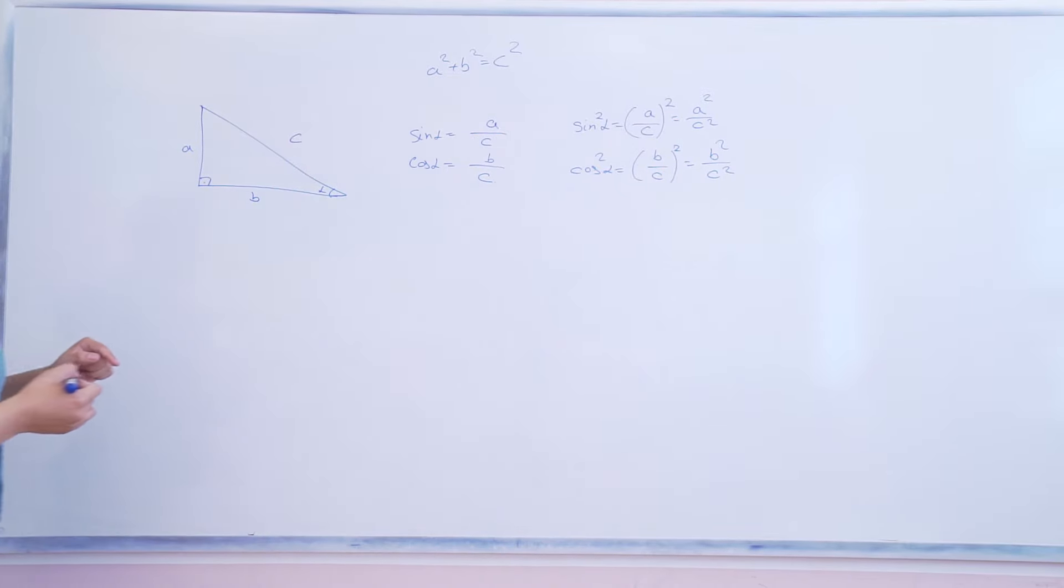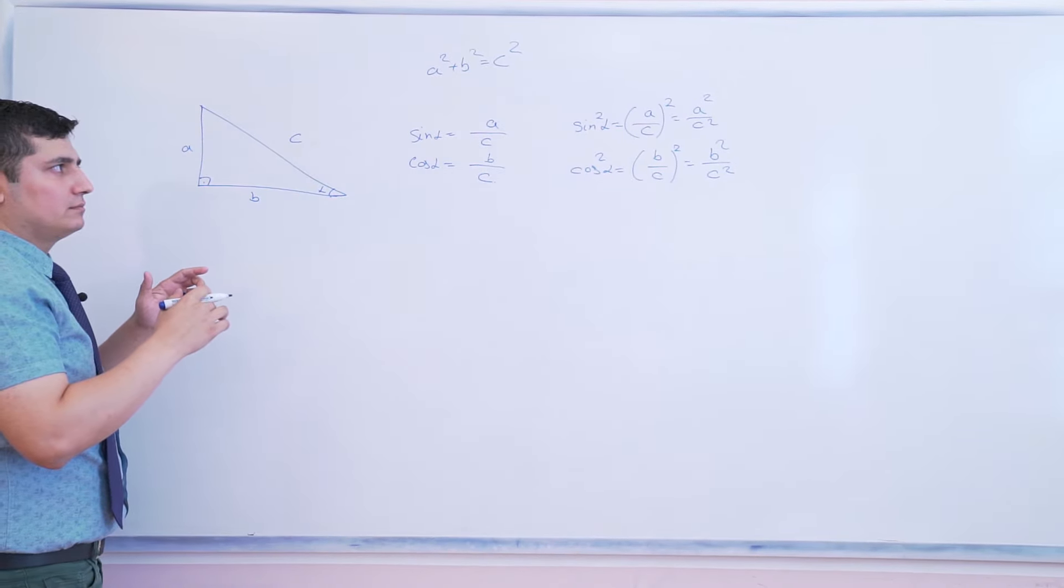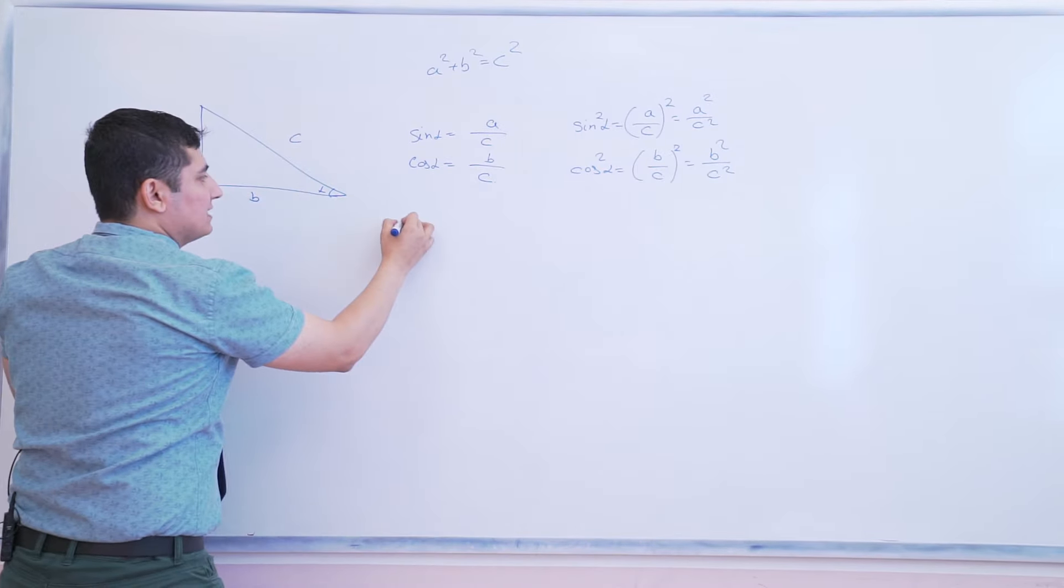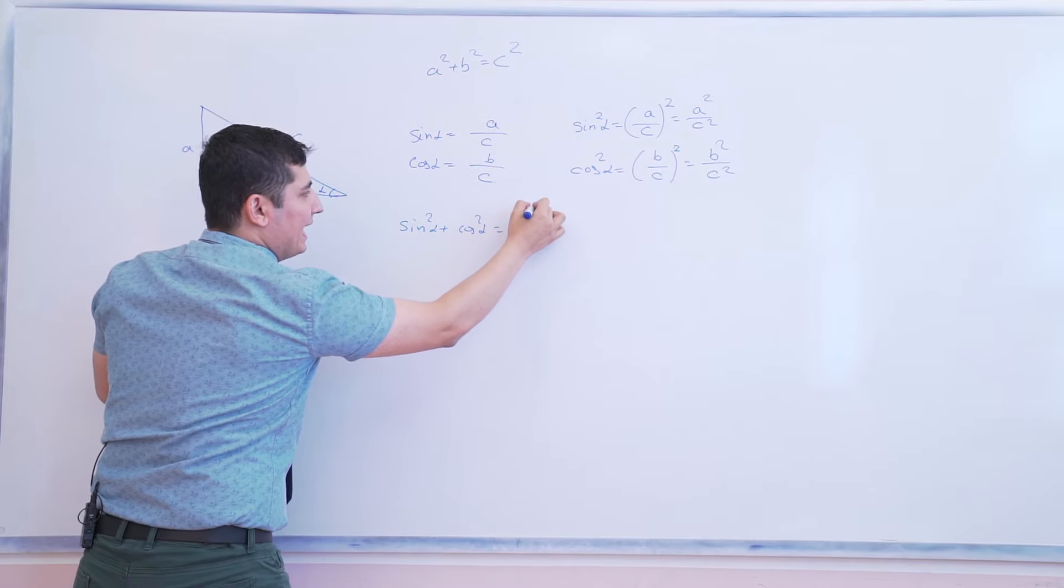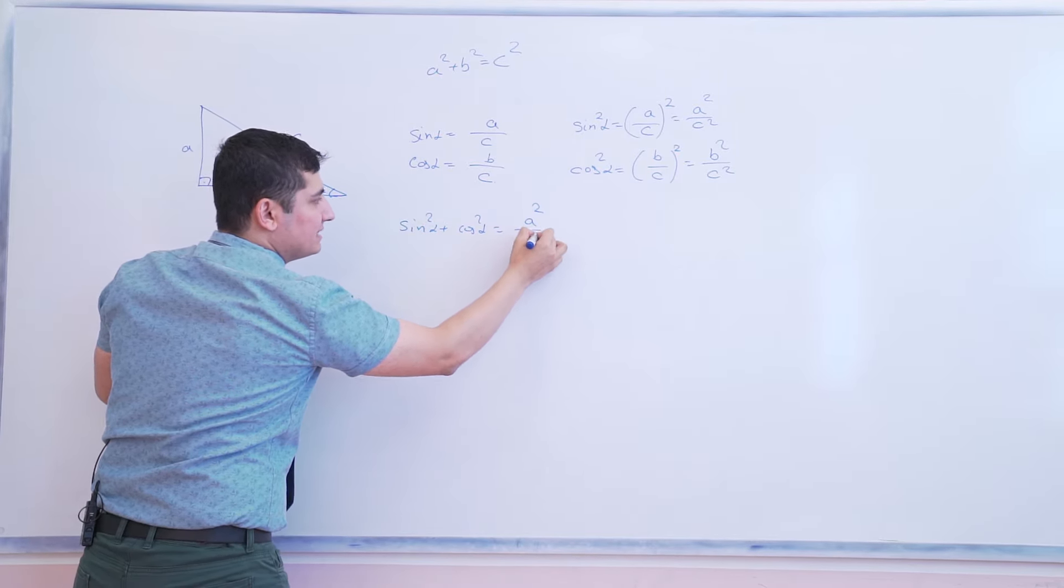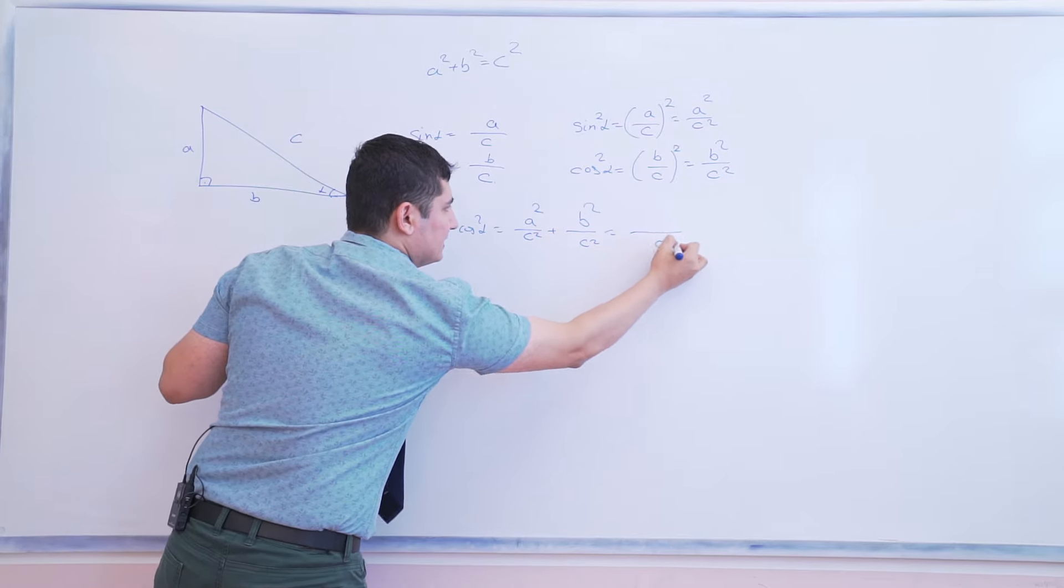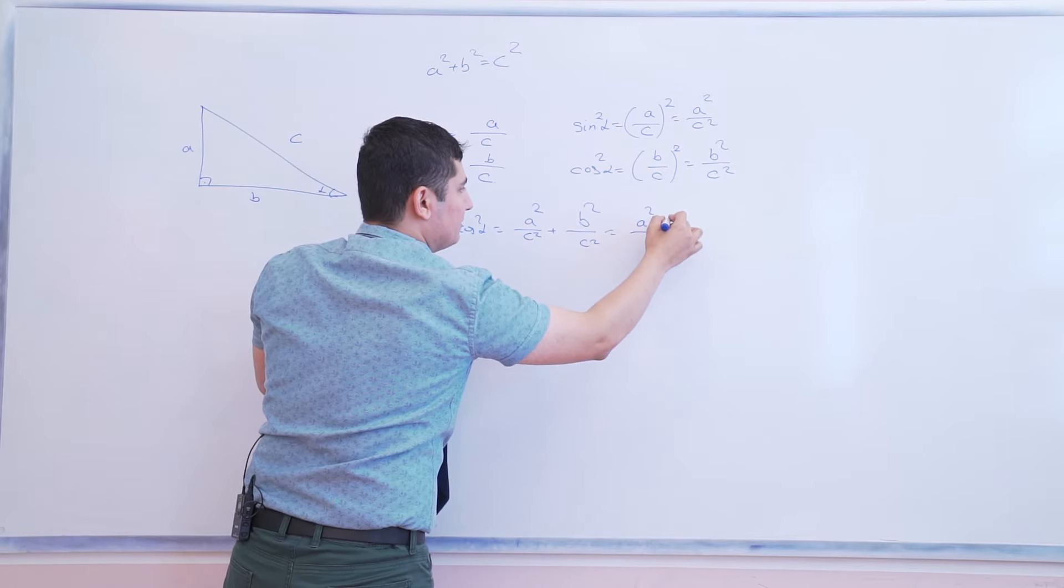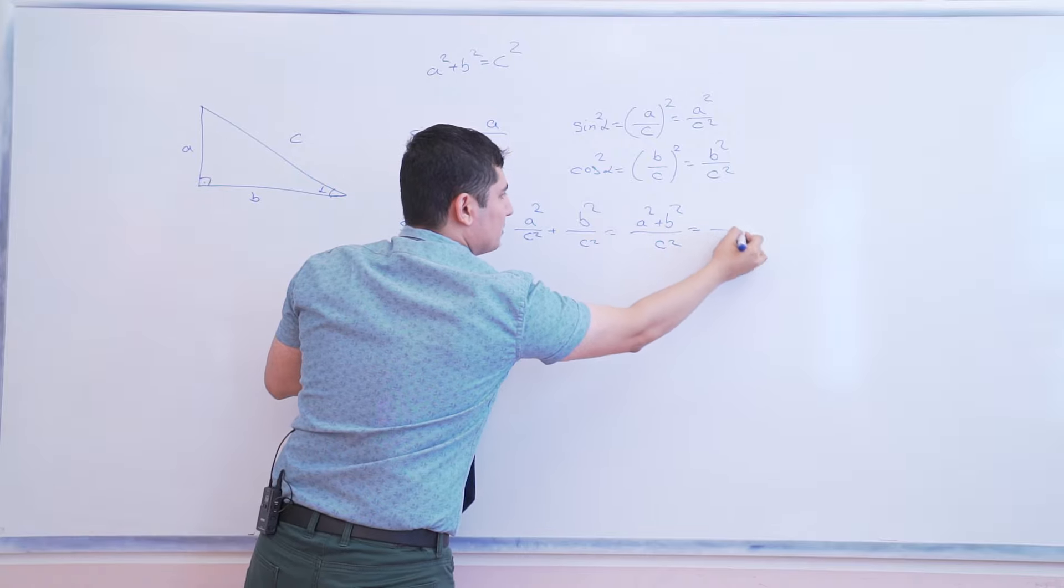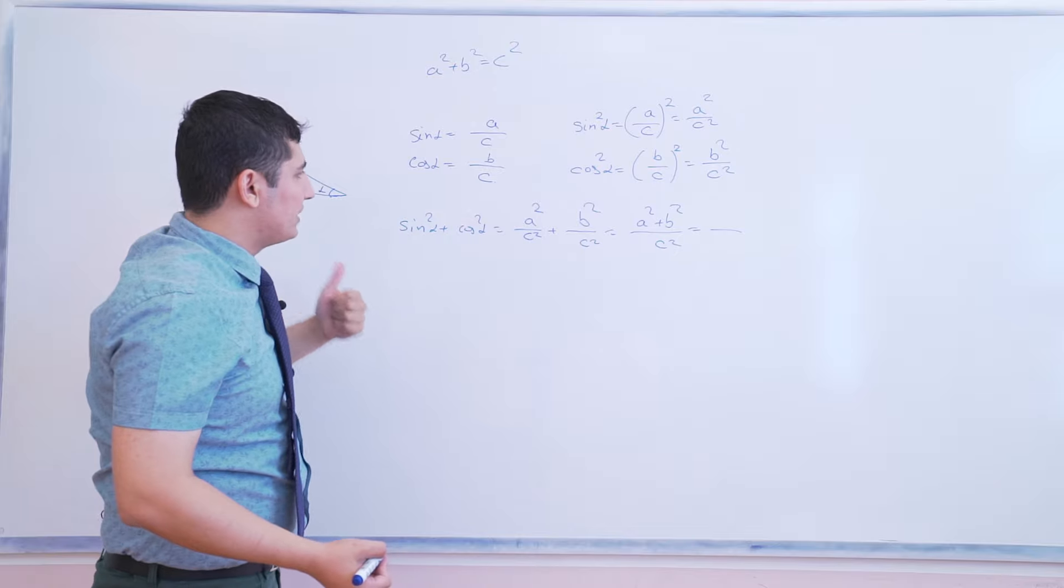Now, let's get both sides sum. Sine squared alpha plus cosine squared alpha equals A squared divided by C squared plus B squared divided by C squared. Same denominator so we just add the numerators. A squared plus B squared. We know that A squared plus B squared equals C squared from the Pythagorean theorem.